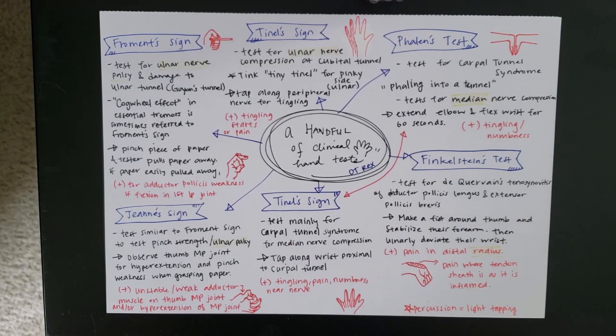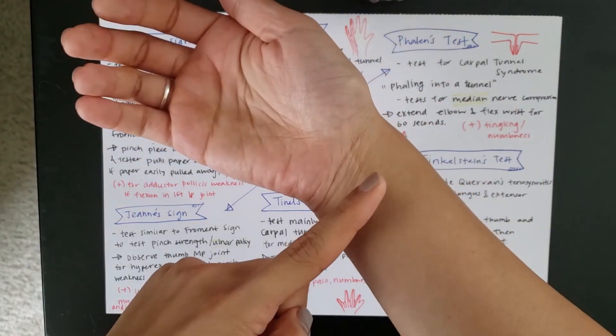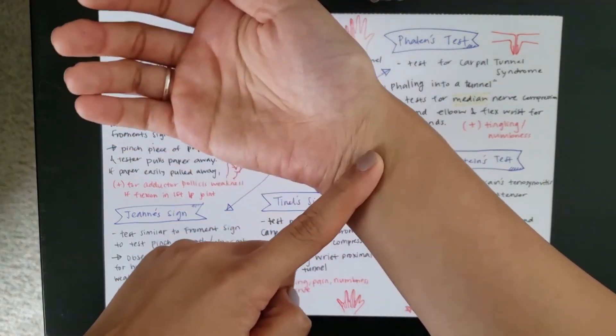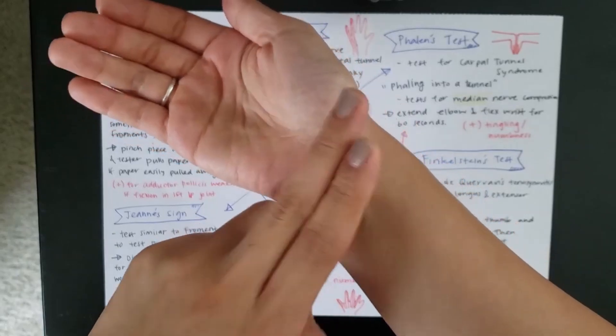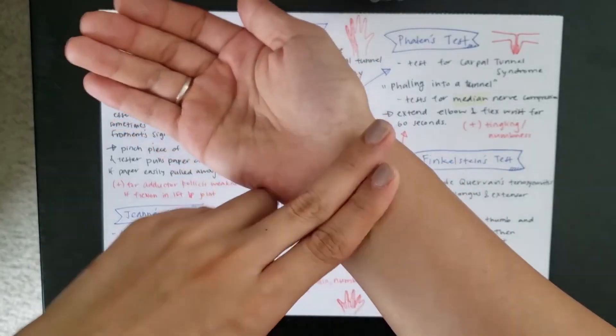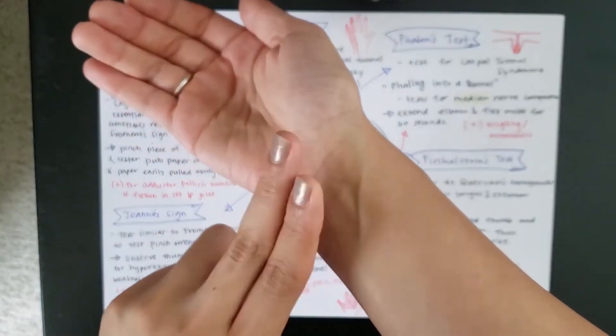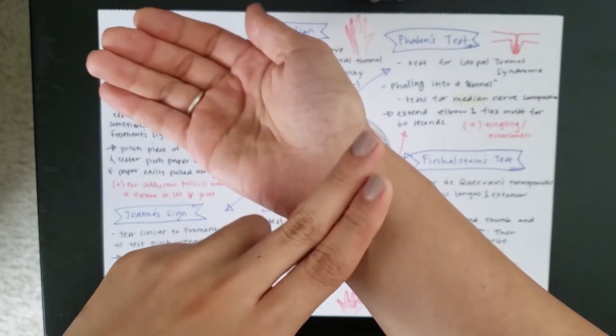But, I want to also say that Tinel is mainly used to test for carpal tunnel syndrome. For median nerve compression. And for this one, we are going to use percussion. The way you use this test is to tap along the wrist proximal to the carpal tunnel. The carpal tunnel is right here. So, that's where we're going to be tapping. So, someone who has signs of carpal tunnel, when you do this, it's going to cause tingling,